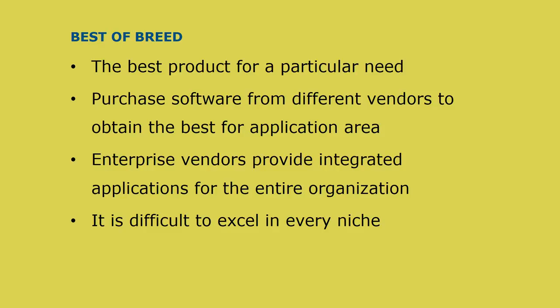Best of breed is about purchasing the best product of its type for a particular functional human resource management need. Organizations often purchase software from different vendors in order to obtain best of breed for each application area — for example, a human resource package from one vendor and an accounting package from another. While enterprise vendors provide integrated applications for the entire organization in one system, every module may not be best of breed, because it's difficult to excel in every niche and every product type.